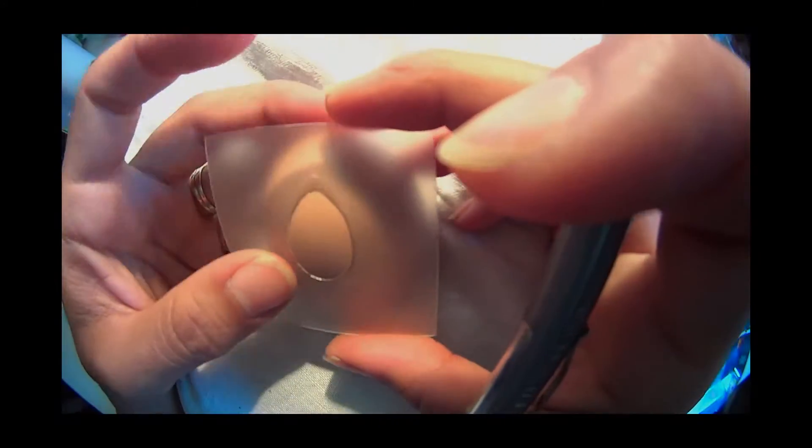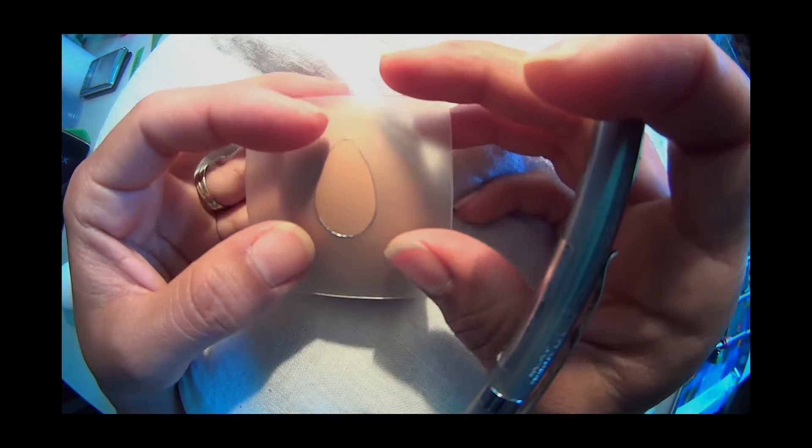Simply place the template on your egg and trace as many shapes as it will fit around the shell.